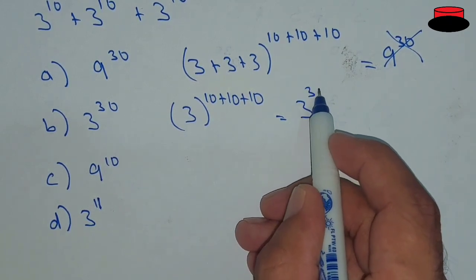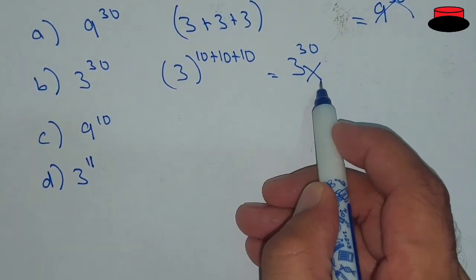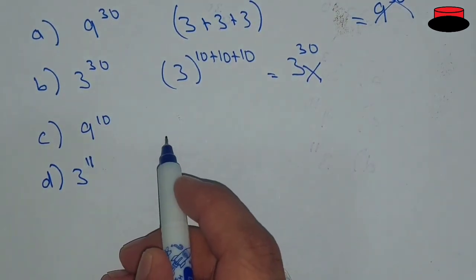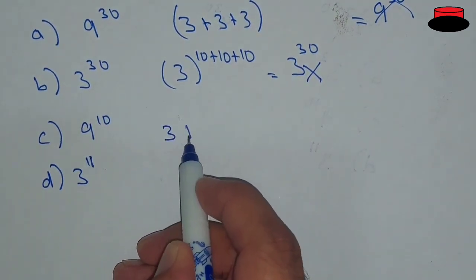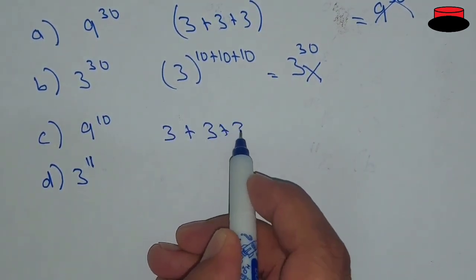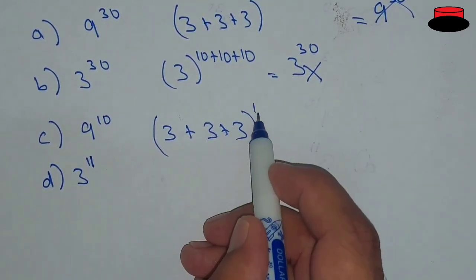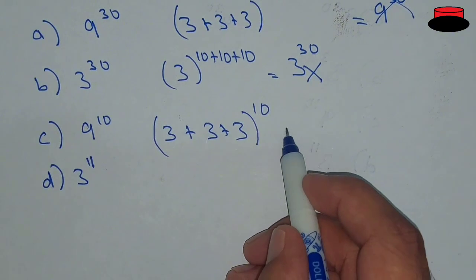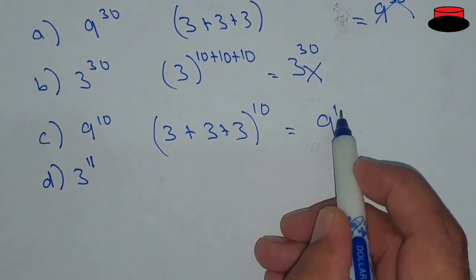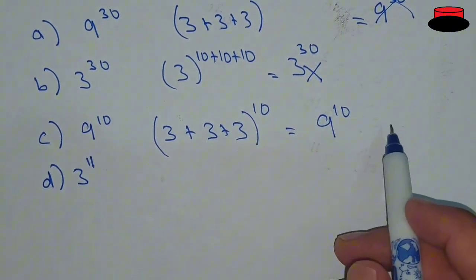This is not correct. Let's look at another way to solve this problem. Here we have (3 + 3 + 3)^10. In this way, the answer would be 9^10.